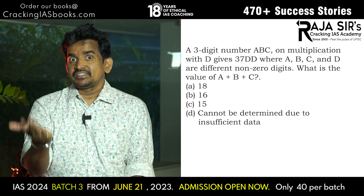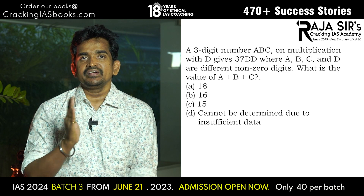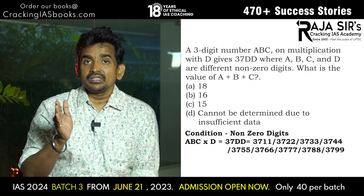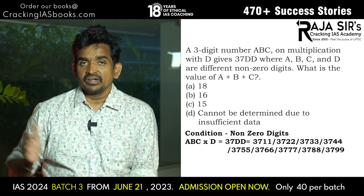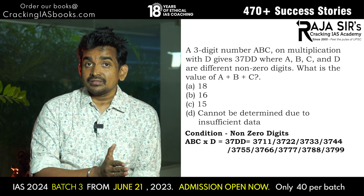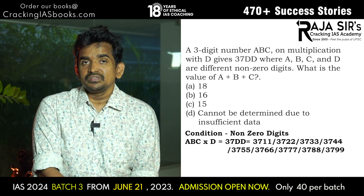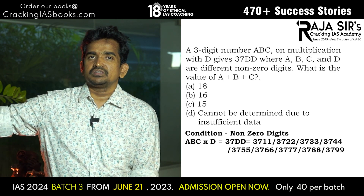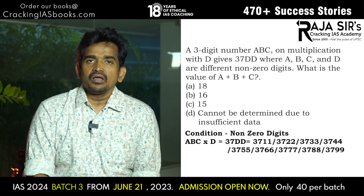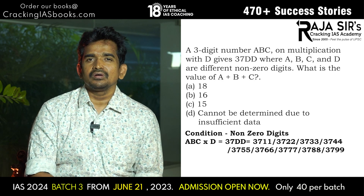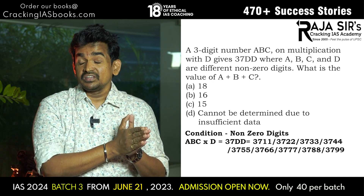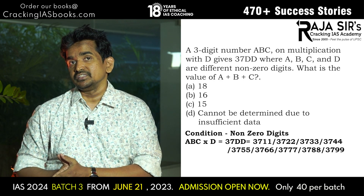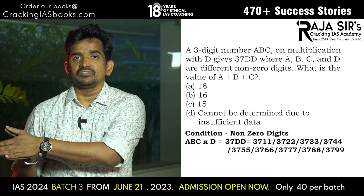Consider the right-hand side: 37DD. That means it could be 3711, 3722, 3733, up to 3799. Since the problem mentions non-zero digits, I am not taking 3700, so I am considering from 3711 to 3799.